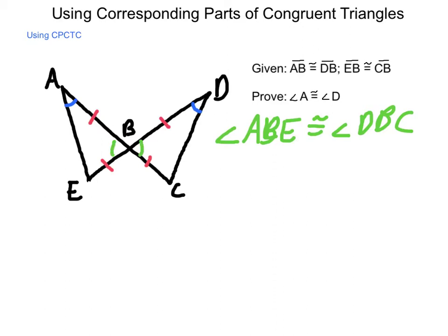Now, since we have that part, we can say that triangle ABE is congruent to triangle DBC, and the reason for that is that we have a side-angle-side postulate that has come out.